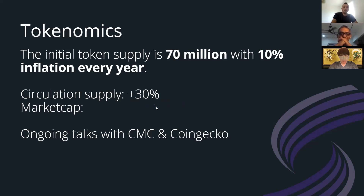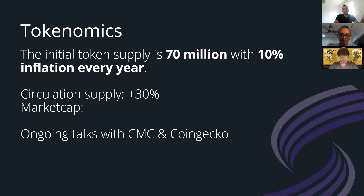It's not possible to put an exact number on the circulating supply because a lot of our crowd loan participants still have locked tokens, but through vesting, some tokens are released at every block. That's also why I left the market cap blank — for market cap you need the exact circulating supply multiplied by the market price. We are talking with CoinMarketCap and CoinGecko and they are working on making those calculations available. Once ready, it will go live on both listing websites in the upcoming weeks.